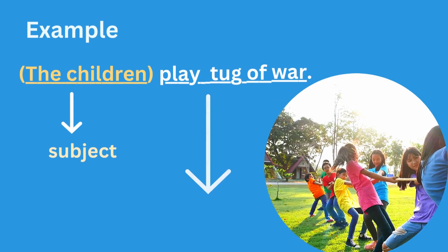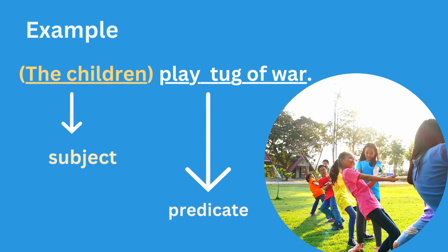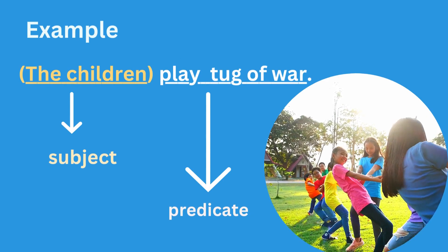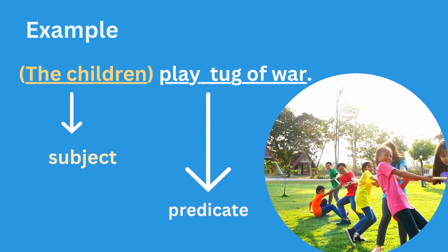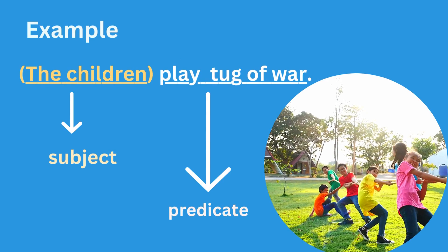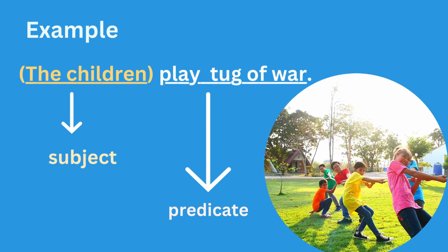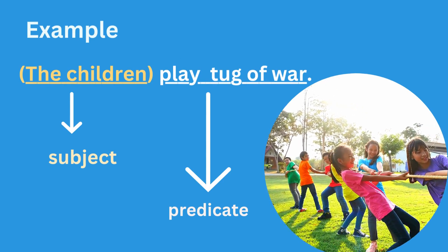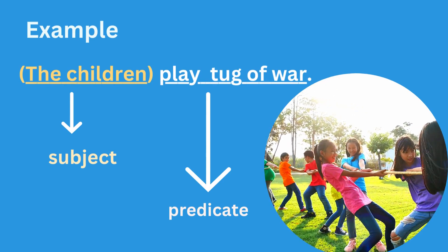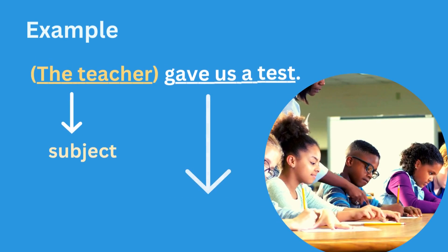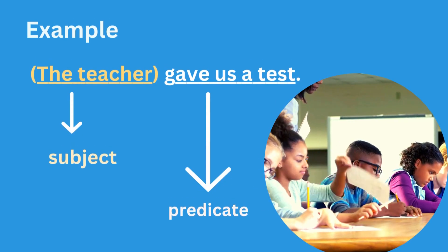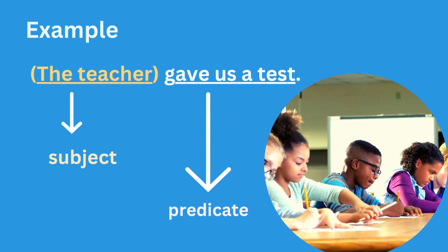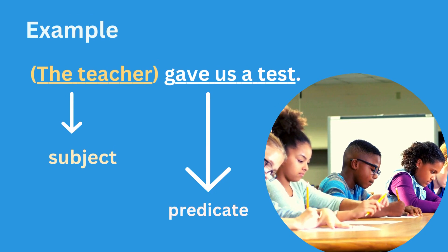Let's look at this other sentence: the children play tug of war. The subject of this sentence is the children and the predicate is play tug of war. Next sentence: the teacher gave us a test. The subject of this sentence is the teacher, and the predicate is gave us a test.